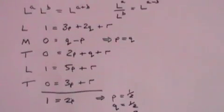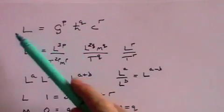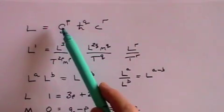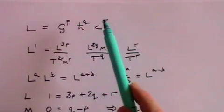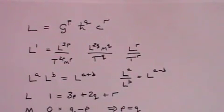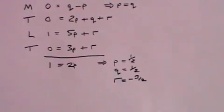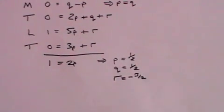And now we can go back to the formula that we started with. L, in other words a unit of length that's based on the fundamental constants, g to the power p, h to the power q, c to the power r. We now know what p, q, and r are: p is 1 half, q is 1 half, and r is minus 3 halves.